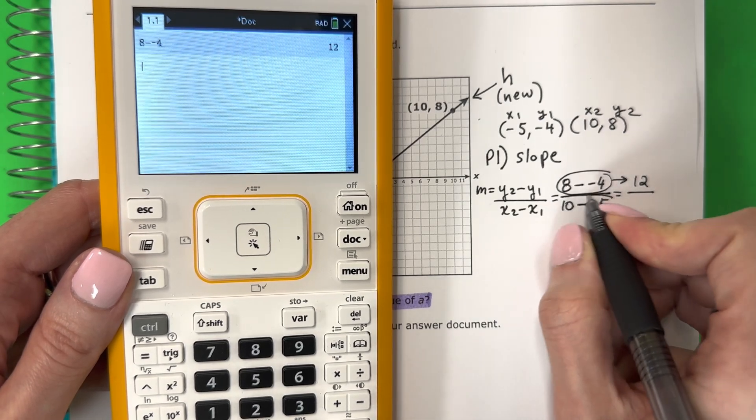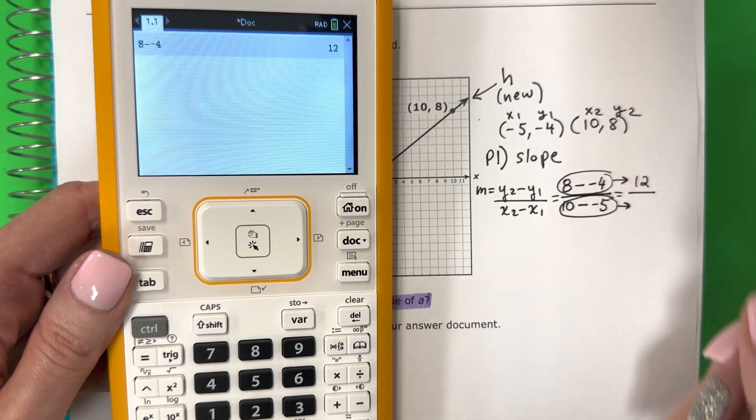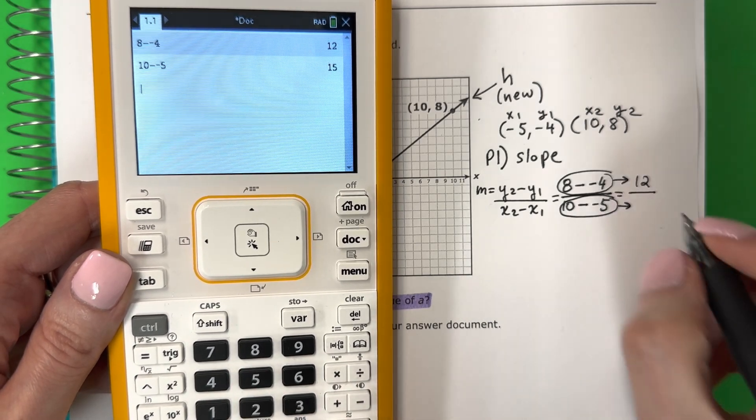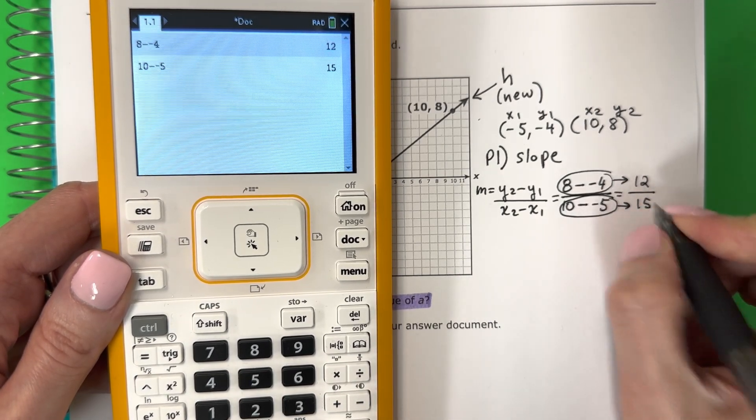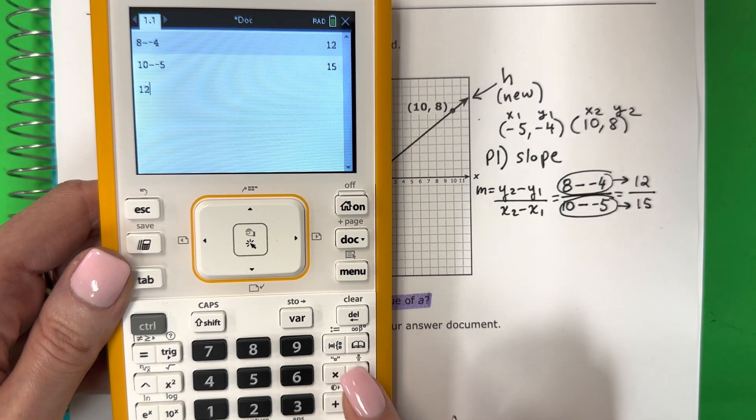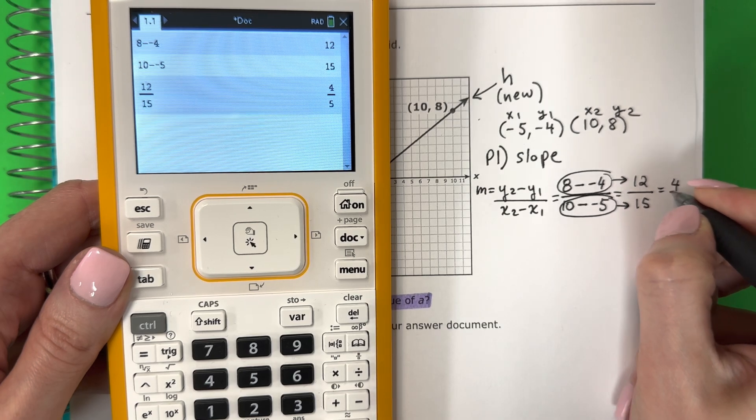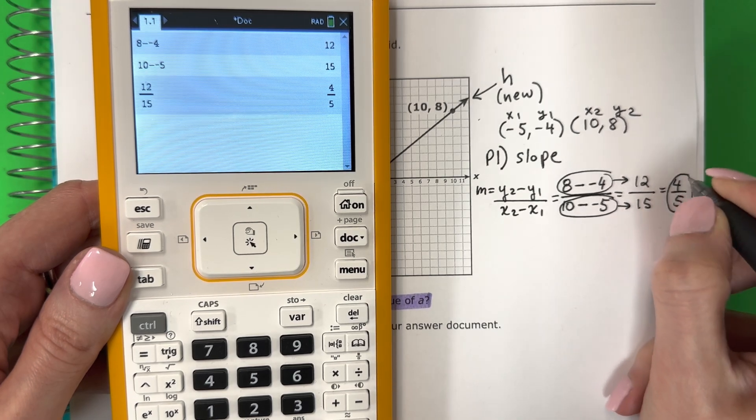Divided by 10 minus negative 5. 10 minus minus 5. 15. And let's go ahead and put that in the calculator. 4 fifths. This is my slope. Este es mi slope. My m.